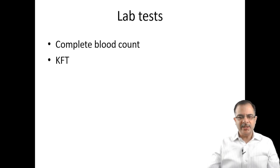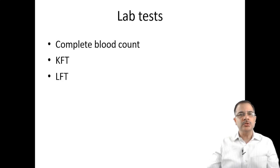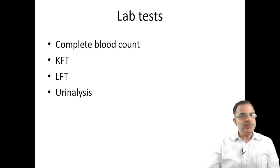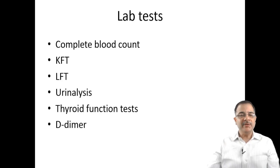Kidney function tests: deranged creatinine points toward renal failure. Liver function tests including albumin: elevated bilirubin, SGOT, and SGPT indicate liver failure; low albumin suggests it is the reason for swelling. Urine analysis for proteinuria is important. Thyroid function tests — TSH screens for hypothyroidism or hyperthyroidism. D-dimer test is done if DVT is suspected.